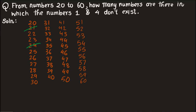We cross out all numbers containing the digit one or four — such as twenty-one, twenty-four, thirty-one, thirty-four, forty, forty-one through forty-nine, fifty-one, and fifty-four. Note that fifty itself is not crossed. After counting the remaining numbers, there are twenty-five numbers between twenty and sixty in which the digits one and four do not exist.